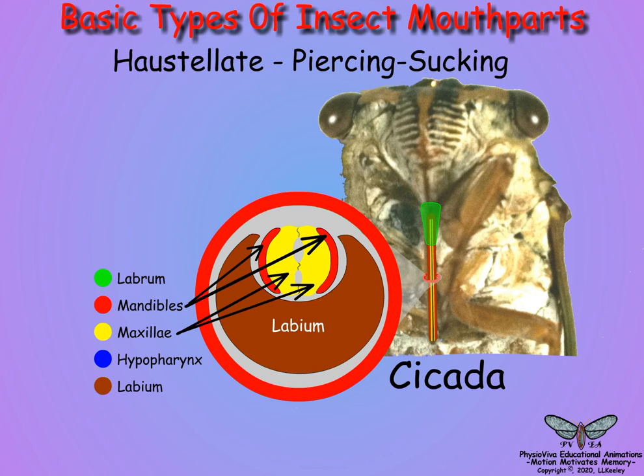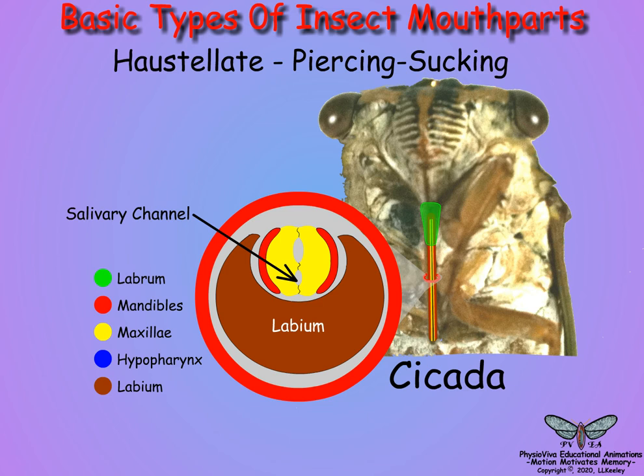The labium forms the large external sheath, and the stylets consist of the maxillae as the central structures with the mandibles as lateral outer layers. The maxillae form two channels: one channel is for releasing salivary secretions that facilitate inserting the stylets into the host, and the second channel is for withdrawing the liquid food.